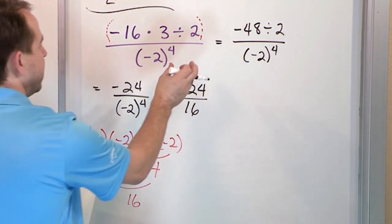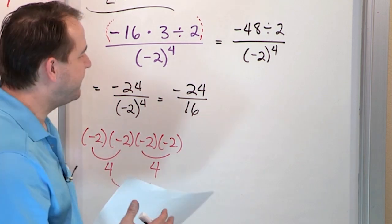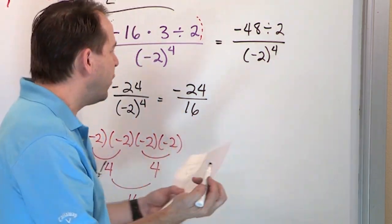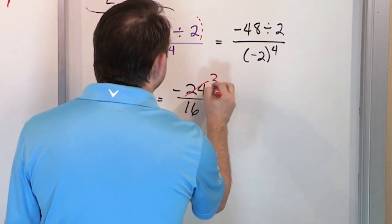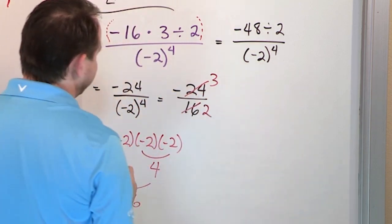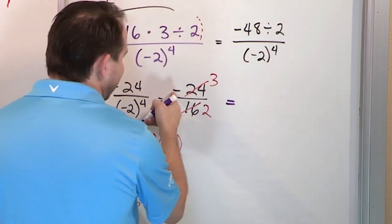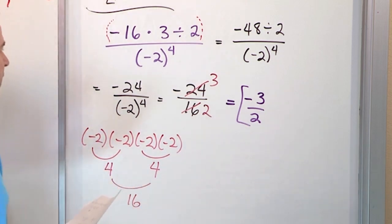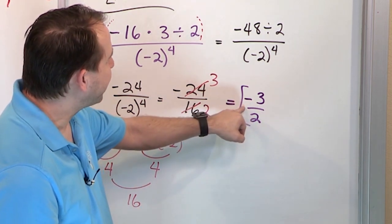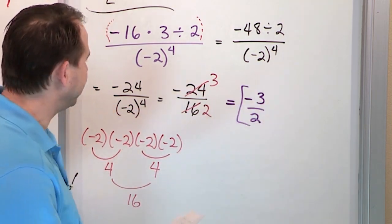Now it's just a fraction: negative 24 on top divided by positive 16 on the bottom. 24 does not divide by 16 evenly, so we simplify the fraction by dividing top and bottom by 8. 8 times 3 is 24, and 8 times 2 is 16. So we get negative 3 over 2. The negative sign stays. You can write it on the top, in front of the fraction, or on the bottom — as long as the negative is there to show the fraction is negative. That's the final answer: negative 3 halves.